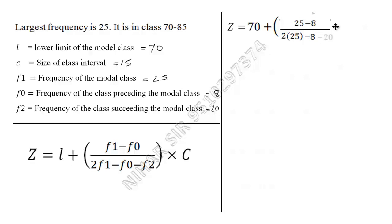Now let us simplify this. 25 minus 8, that is 17. 25 times 2, that is 50. 50 minus 28 in the denominator. So this will be 17 upon 22, that is 50 minus 28, times 15.